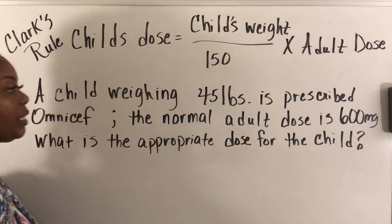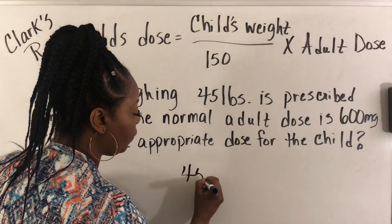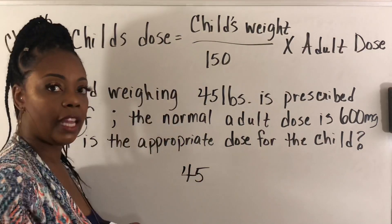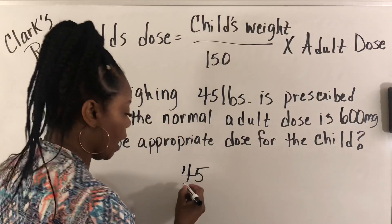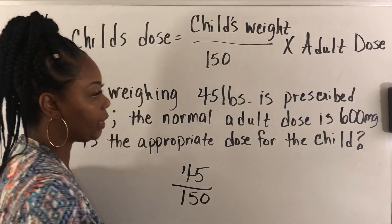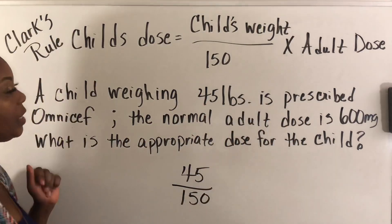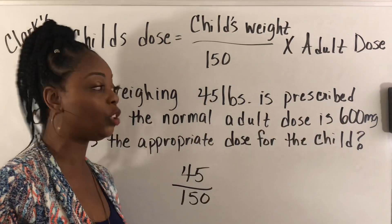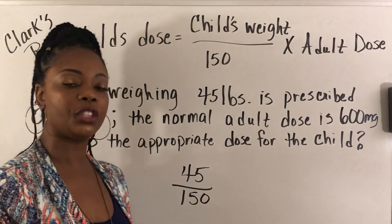The child this time weighs 45 pounds. Our next step is to divide by 150 — that's correct. A child weighing 45 pounds is prescribed Omnicef. The normal adult dose is 600 milligrams. What is the appropriate dose for the child?